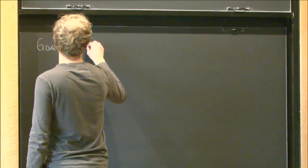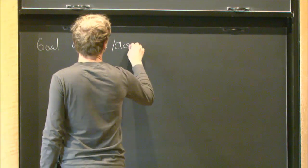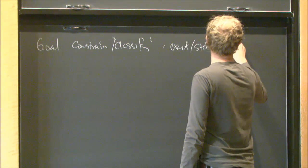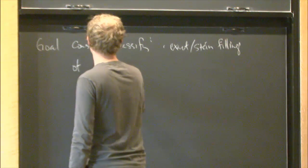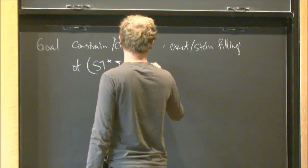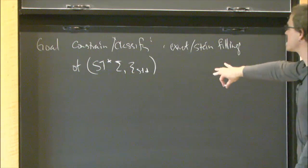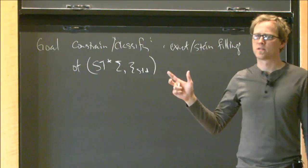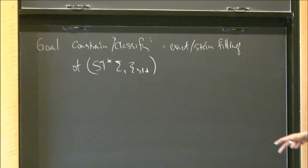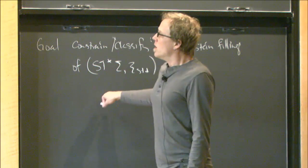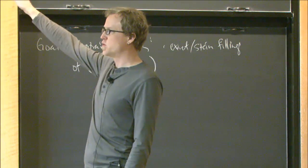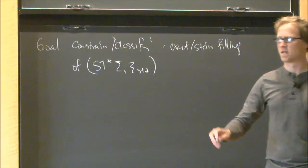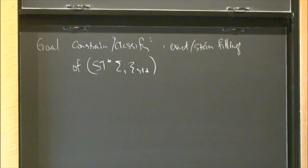The goal is to constrain or classify exact or Stein fillings of the unit cotangent bundle. This has a lot of other contact structures; this may be the only one in its given Chern class, but there are infinitely many contact structures on here. A bunch of them satisfy something like c₁=0, and a bunch of them have infinitely many Stein fillings. So it's the contact structure that's constraining things, not the manifold itself.